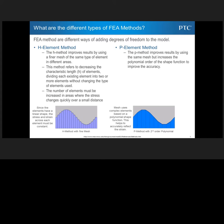The H method refers to decreasing the characteristic length of the elements, dividing each existing element into two or more elements without changing the type of elements used. So the number of elements must be increased in areas where the stress changes quickly over a small distance. And that's not the case in the P method. This method refers to increasing the degree of the highest complete polynomial. PTC will just go ahead and throw more math in those areas versus elements.